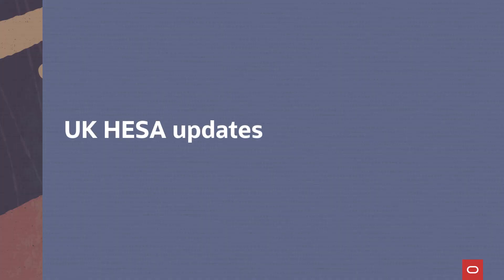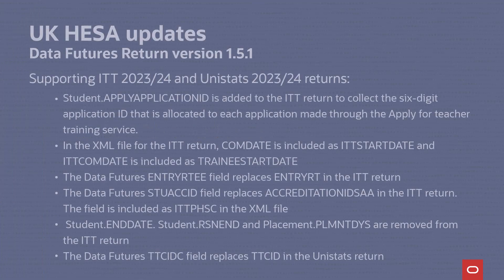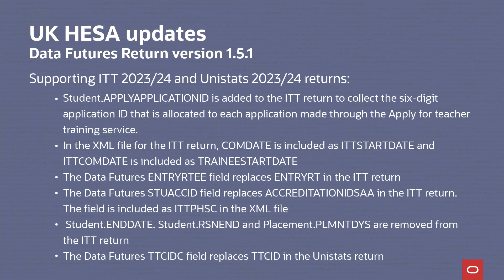Moving to the UK HESA updates, PUM 29 includes multiple updates for entities and fields to support the UK Data Futures return specification version 1.5.1. Here's a summarized list of the updates for the ITT and Unistat's 2023-24 returns, and more detail can be found in the documentation.